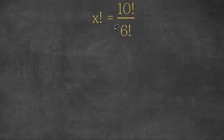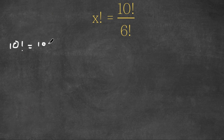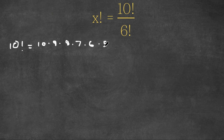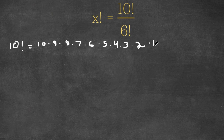So we have x factorial is equal to 10 factorial over 6 factorial. Now, 10 factorial is equal to 10 times 9 times 8 times 7 times 6 times 5 times 4 times 3 times 2 times 1 — it's equal to 10 multiplied by n-1 all the way down to 1.